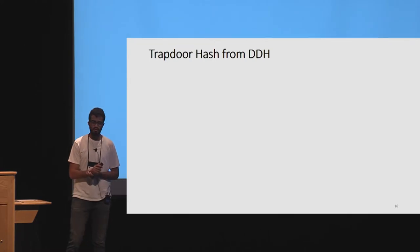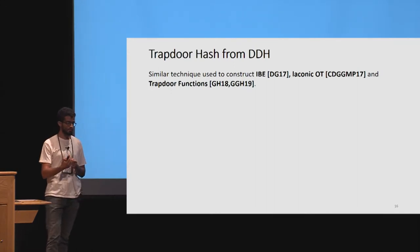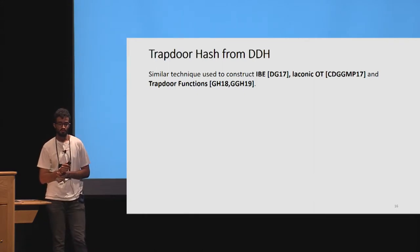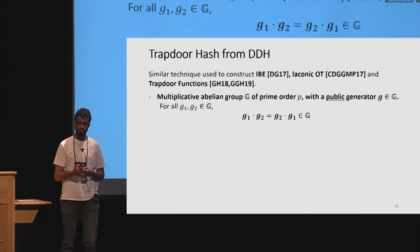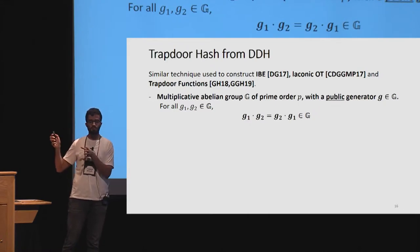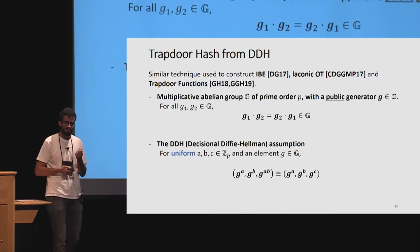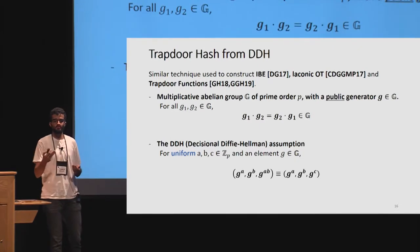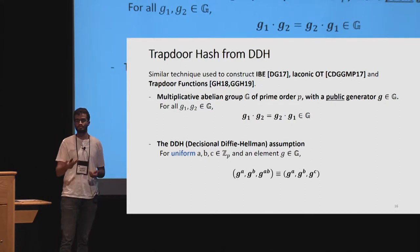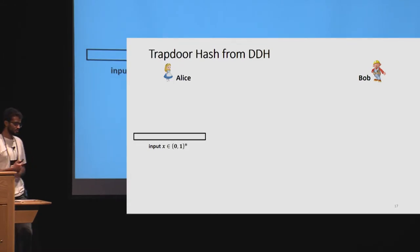Next, I'll show the trapdoor hash construction from DDH. We use techniques previously used to construct IBE, laconic OT, and trapdoor functions. We work over a multiplicative abelian group G of prime order p with a public generator g. Recall the DDH assumption: for random integers a and b from Z_p, the value g^(ab) looks like a uniform group element even given g^a and g^b.